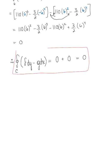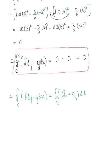Therefore, the line integral of the closed curve of F dy minus G dx equals 0. This confirms Green's theorem — whether we use the line integral form or the double integral form over region R, we get the same answer: 0.